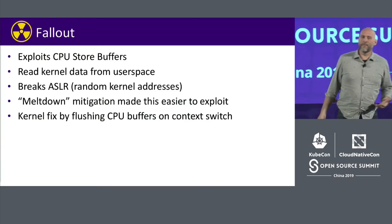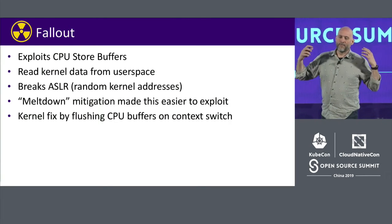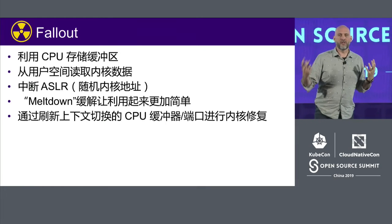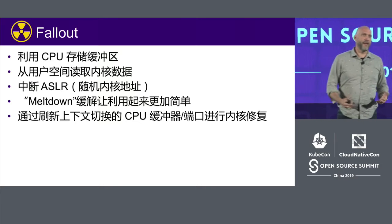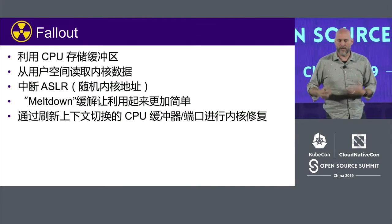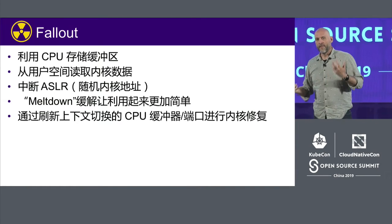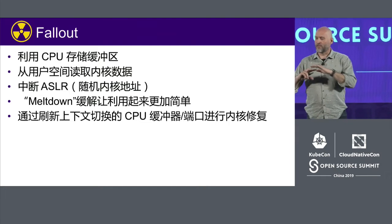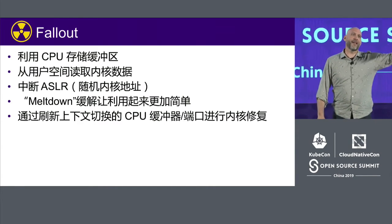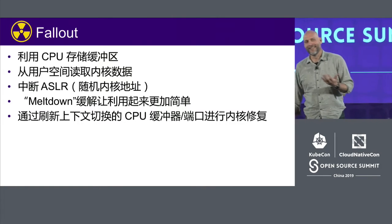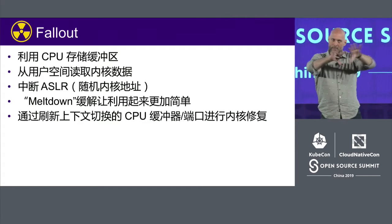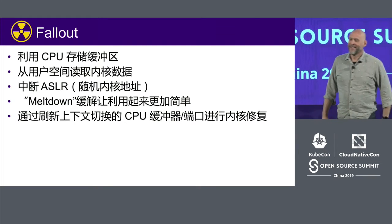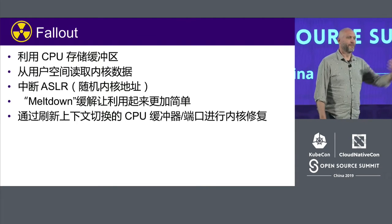Fallout exploits the store buffers in the CPU. This one is a little different — you can't read application to application or across virtual machines, but you can read from user space into the kernel. The kernel stores lots of secrets: keys, memory locations showing what other applications are doing. You don't want an application reading into the kernel — this breaks that. As part of how the kernel protects things, we randomize addresses. Fallout totally breaks that. And our fixes for Meltdown actually made Fallout easier, because we thought we were keeping things in separate memory spaces. Fallout exploits that. Fix: flush the buffers, update your BIOS.